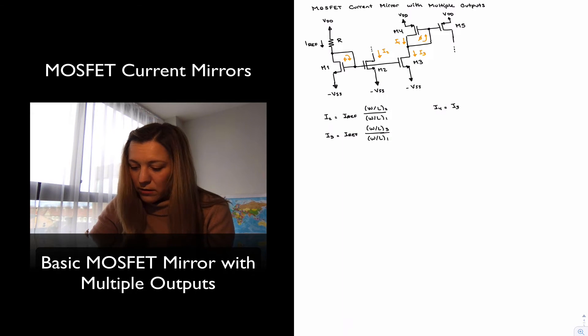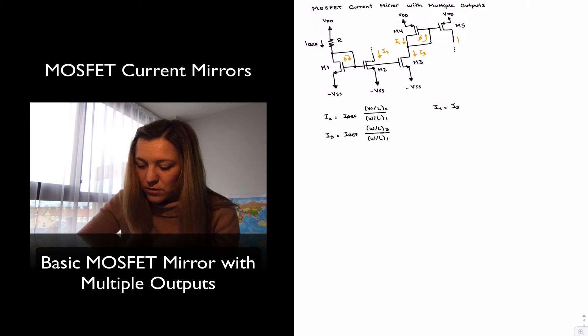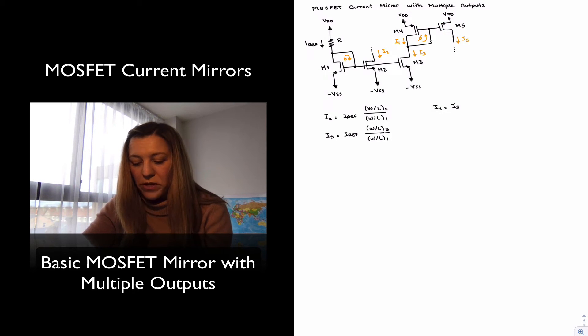And then finally, I5 will be equal to I4 times width over length of transistor 5 divided by width over length of transistor 4. And you can see how this could keep expanding.